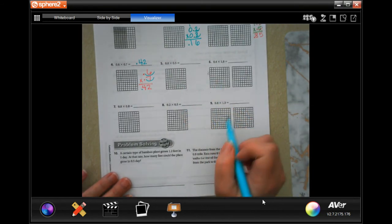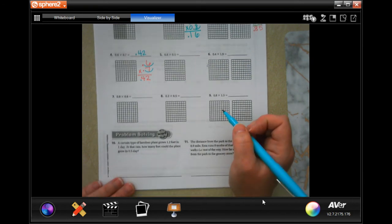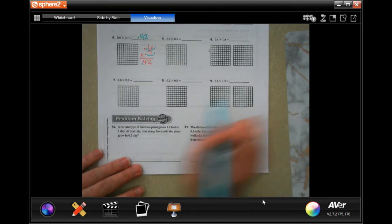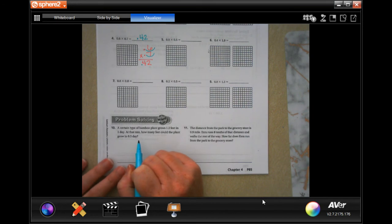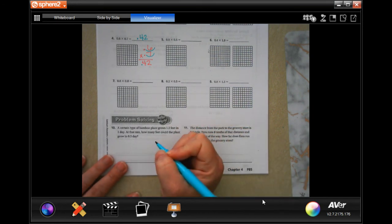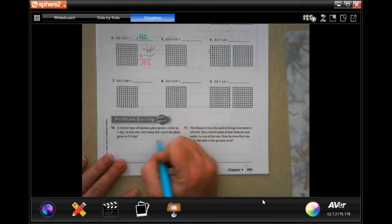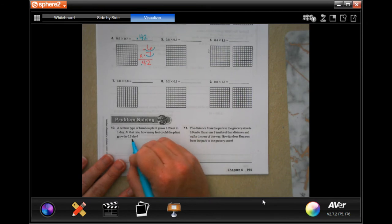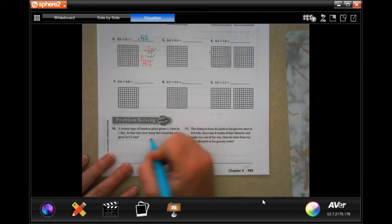You guys go ahead and finish up through 9. You totally can. Number 10 says a certain type of bamboo plant grows 1.2 feet in one day. At this rate, how many feet could the plant grow in 0.5 day or half of a day? So, 1.2 times 0.5.